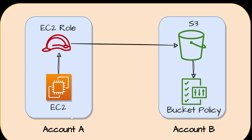In account A, one EC2 instance is there and one IAM role is attached with this EC2 instance. And in account B, one S3 bucket is there and a corresponding bucket policy is attached with this S3 bucket. We will access objects within this S3 bucket from this EC2 instance in another account.